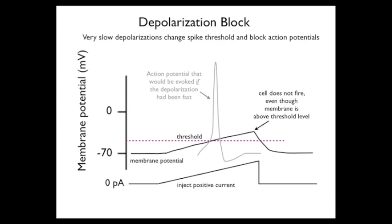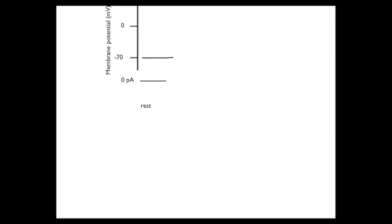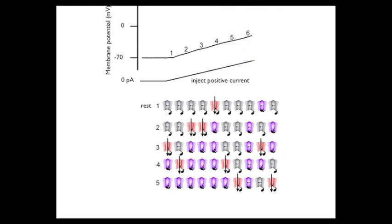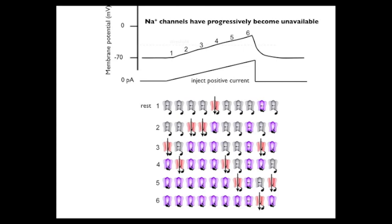The next slide illustrates and explains the events and consequences that create the block. We're going to look at the state of the same ten sodium channels at six points in time as the membrane is slowly depolarized. We start at rest where most of the channels are in the available state. At time point two, the depolarization has increased slightly and opens a few more sodium channels, but the channel that was opened a moment before has already inactivated.